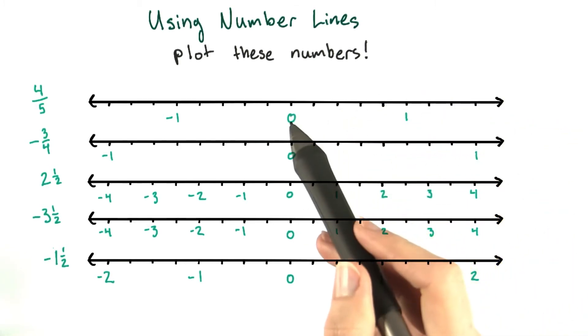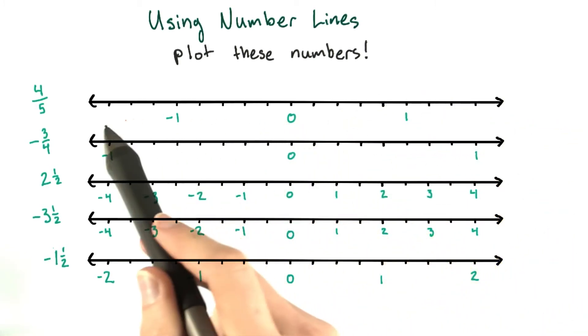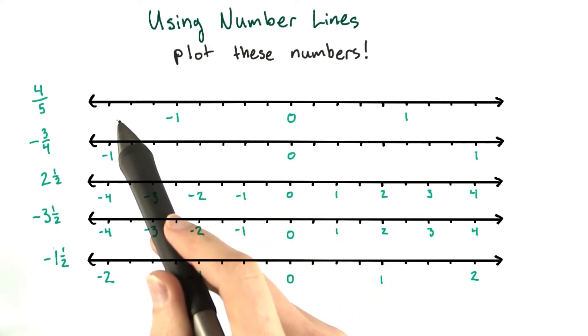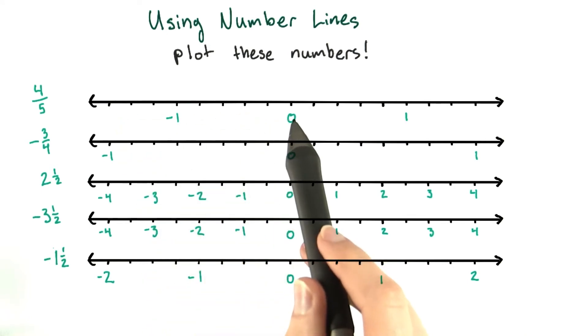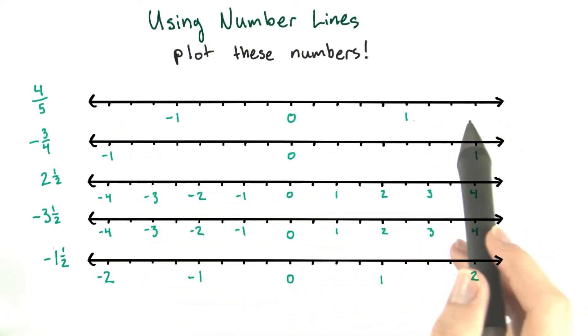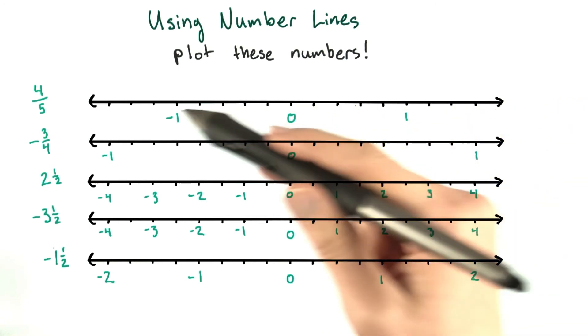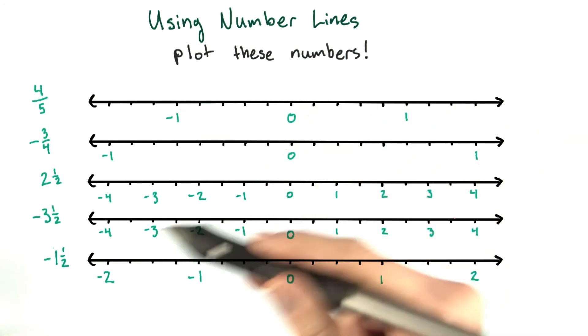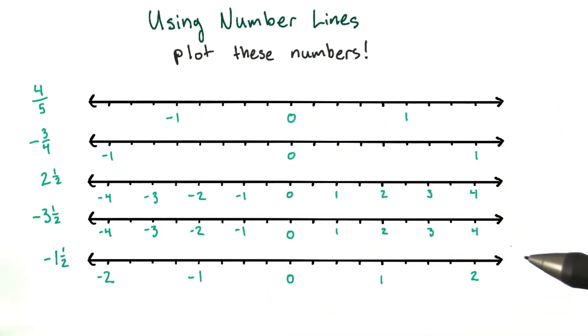Also notice that negative numbers go on the left hand side, and positive numbers go on the right hand side. Also note that I've labeled all the whole numbers, positive and negative, on each of these number lines.